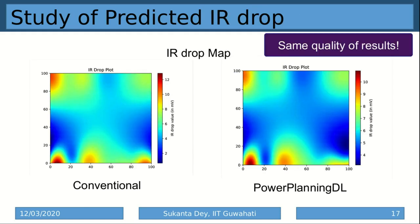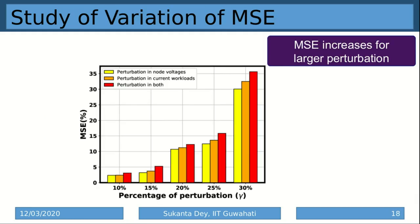The study of predicted IR drop shows that using both the conventional approach and the proposed work, almost the same quality of results is obtained. For test data comprising only 10% perturbation, we get around two to three percent mean square error. When the perturbation is increased to 30%, the MSE increases, which shows that for incremental design — where only small changes are required — our method performs best.